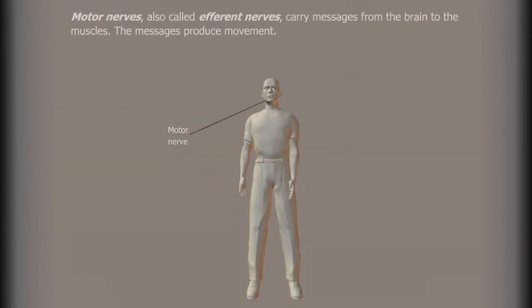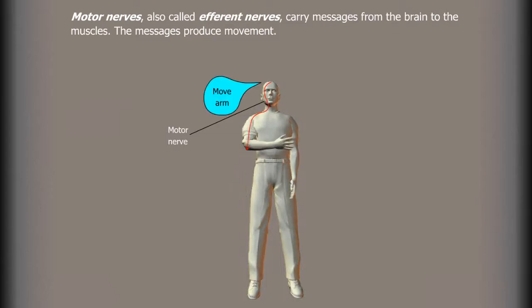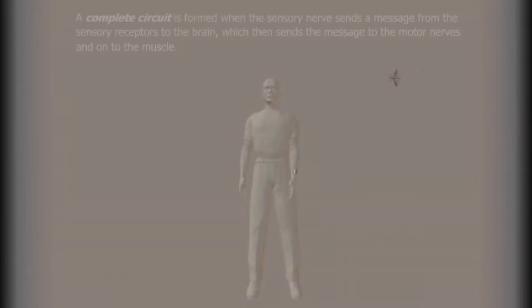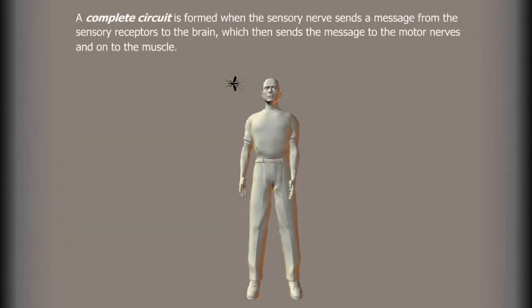Motor nerves, also called afferent nerves, carry messages from the brain to the muscles. The messages produce movement. A complete circuit is formed when the sensory nerve sends a message from the sensory receptors to the brain, which then sends the message to the motor nerves and onto the muscle.